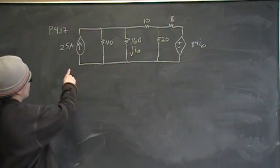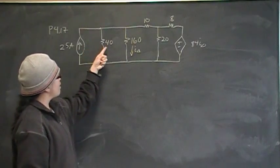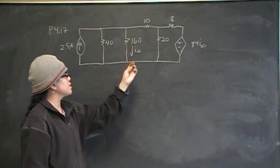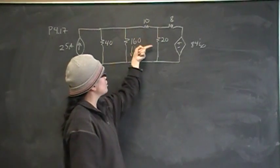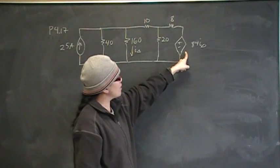So we have a circuit here with an independent current source of 25 amps going into a node that's parallel connected with 40 ohms and 160. And this is 10 ohms, 20, and this is a dependent voltage source with value 84 I delta.